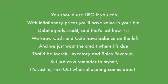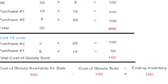With inflationary prices, you'll have value in your bids. Debit equal credit, and that's just how it is. We know cash and COGS have got a balance on the left, and we just want the credit where it's due — that'd be merchandise, inventory, and sales revenue. Just a reminder to myself: it's last in, first out when allocating comes about.